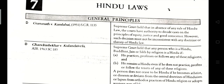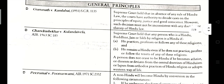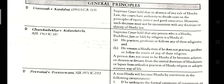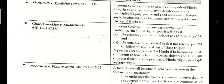Chandrasekhar vs. Kullandai Vira, AIR 1963. The Supreme Court held that any person who is a Hindu, Buddhist, Jain, or Sikh by religion is a Hindu. If a Hindu (A) practices, professes and follows any of these religions, and (B) remains a Hindu even if he does not practice, profess or follow the tenets of any of these religions, a person does not cease to be Hindu if he becomes atheist or diverts from the central doctrine of Hinduism and lapses from orthodox practice.